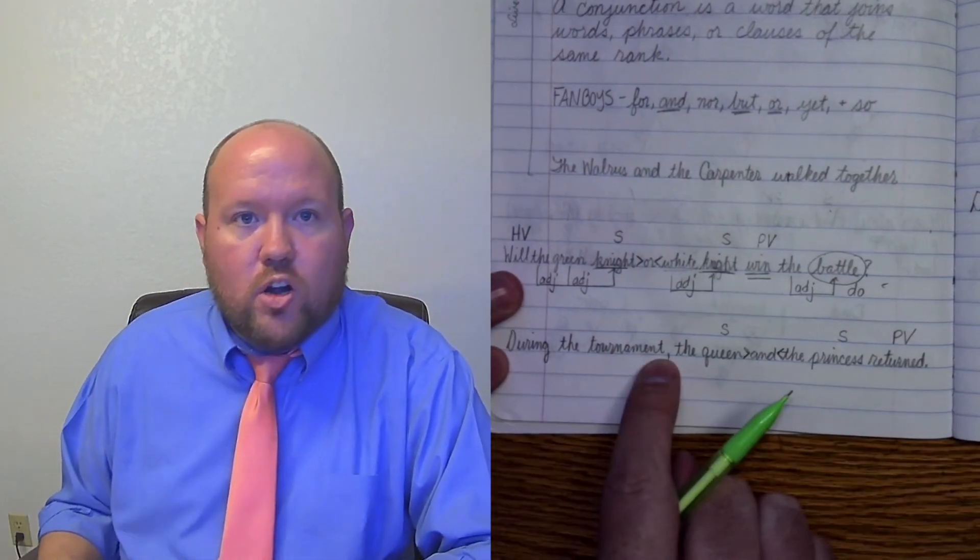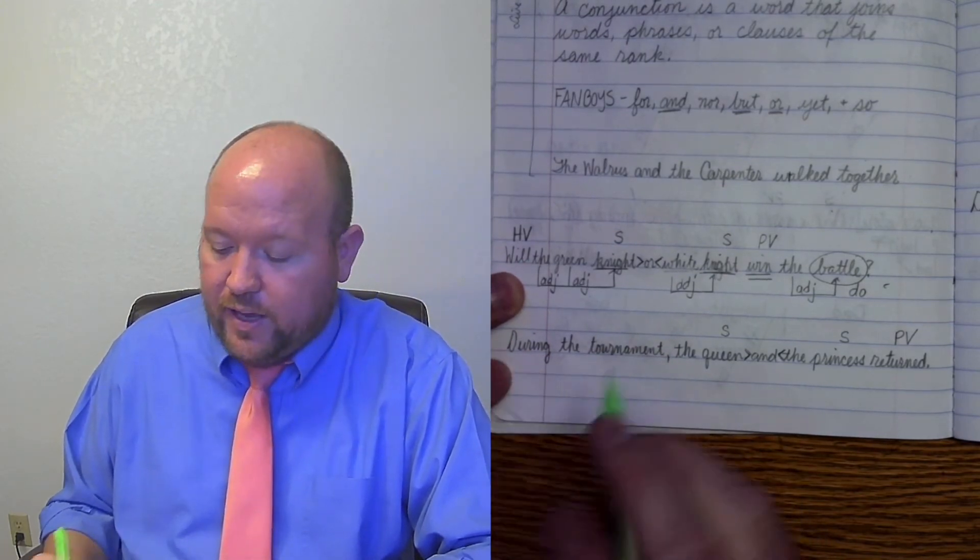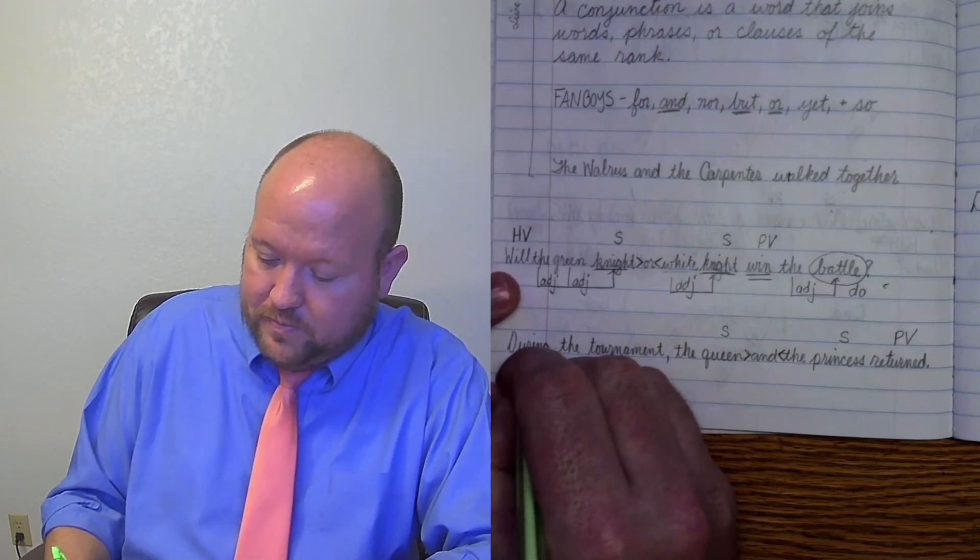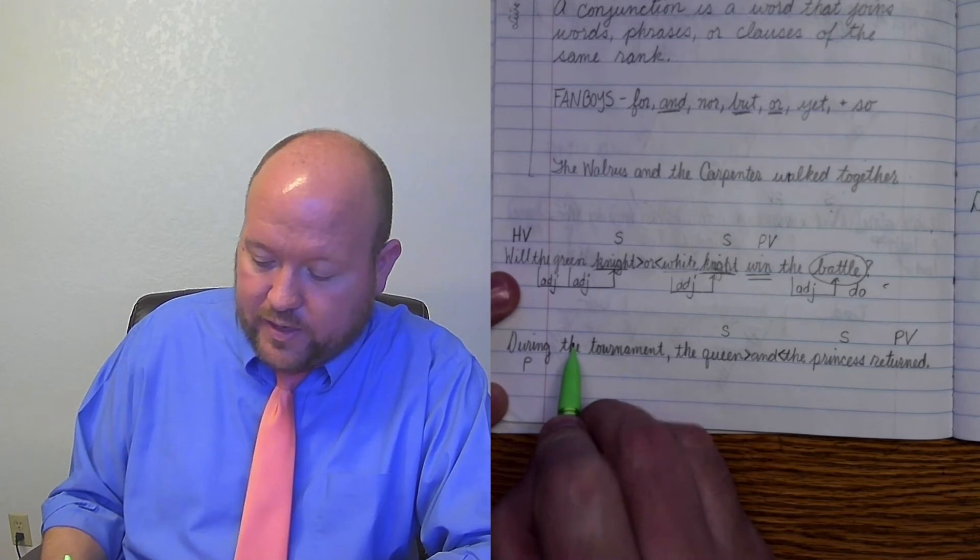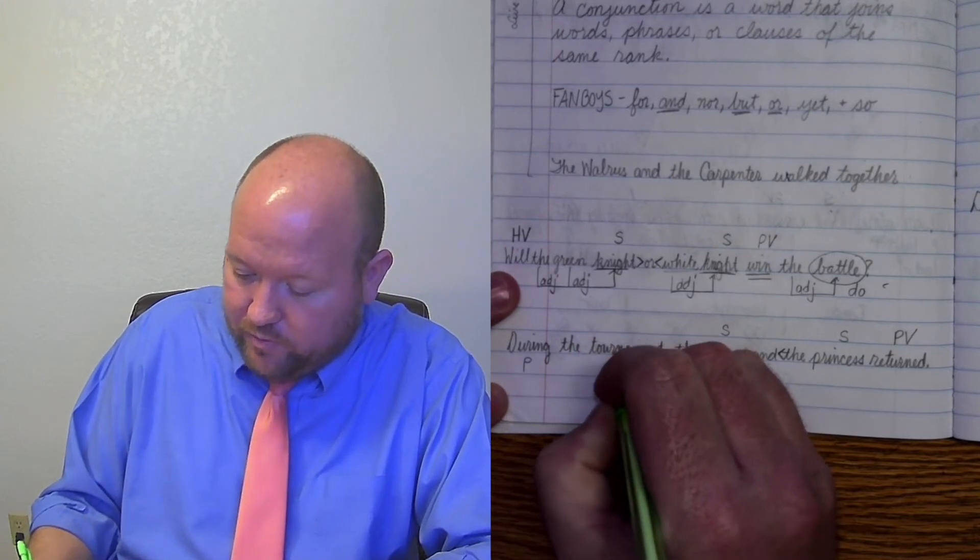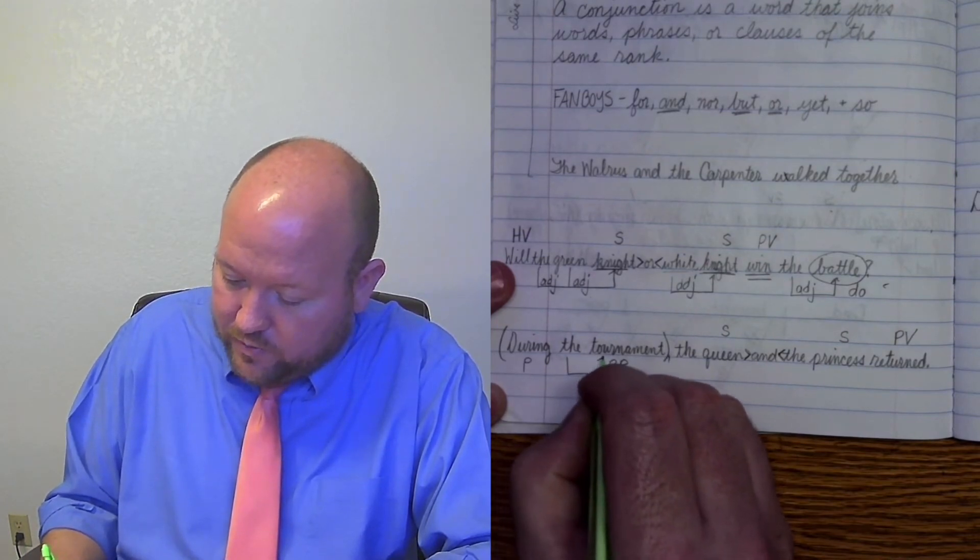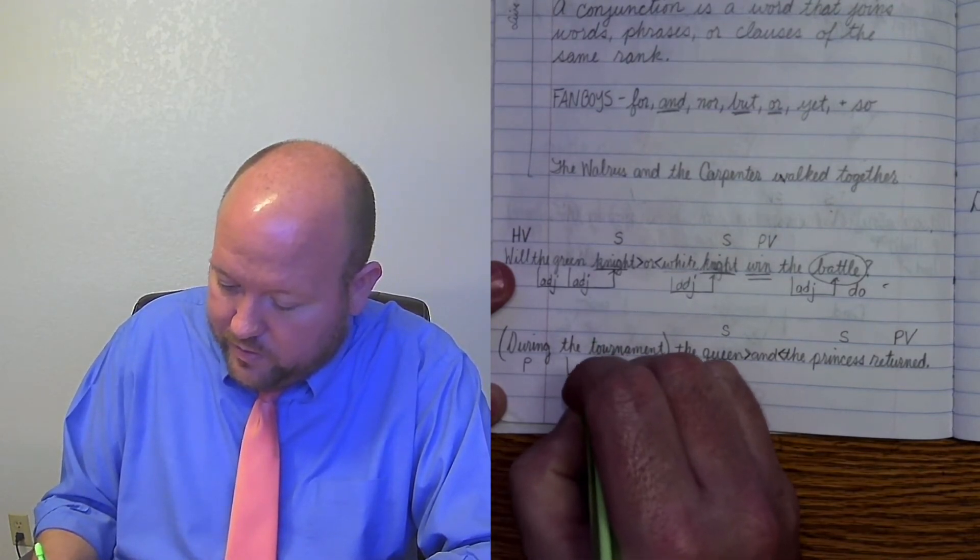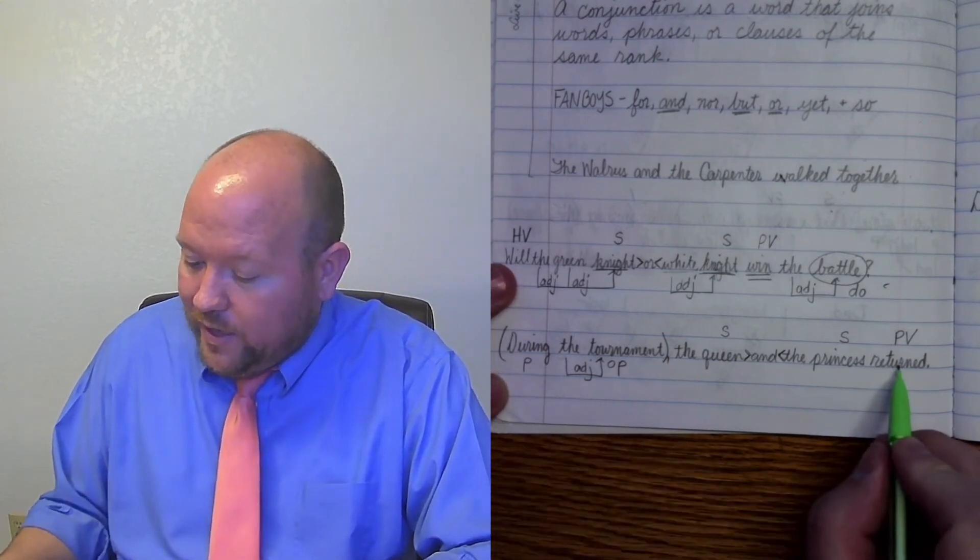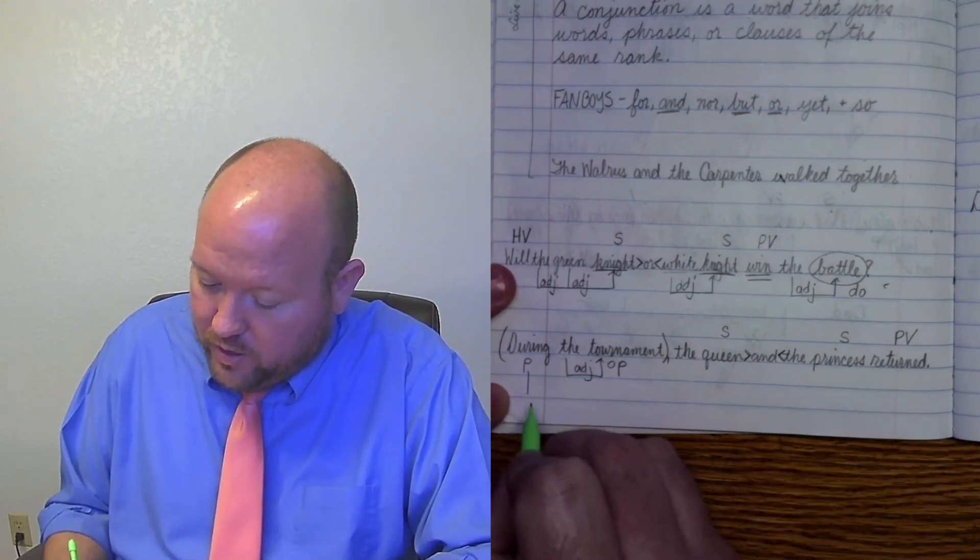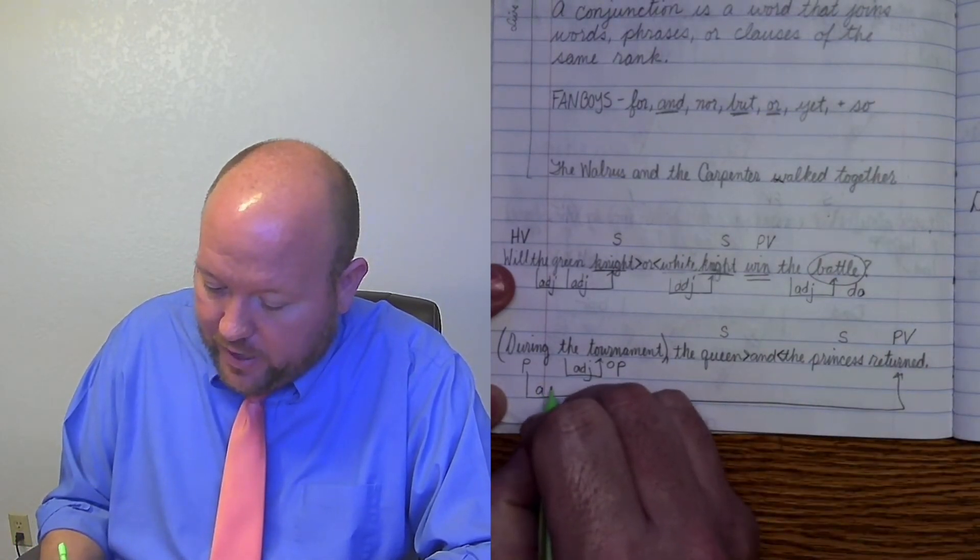Okay, now during the tournament, what is this telling us? What kind of word is during? During is a preposition. During the what, the is an article, tournament, object of the preposition. So put in parentheses, this is an adjective that's describing tournament, and this tells us when something's going to happen, so when they returned. So we're going to draw an arrow here, and we're going to go all the way over to return, and this is acting as an adverb.